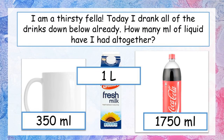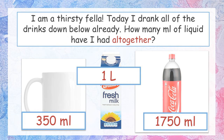Today I drank all of these drinks already and it's only the morning. How many millilitres of liquid have I had altogether? Pause the video and pick out the important pieces of information. The key figures are 350 mils, 1 litre, and 1,750 millilitres. The word 'altogether' tells us it's going to be an addition sum. Pause the video and solve it — don't forget to change your 1 litre into millilitres to make it easy.